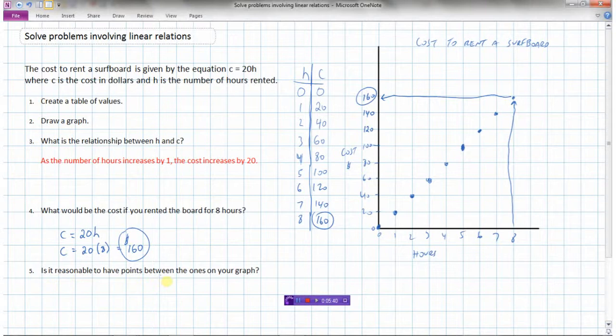Now the last question, is it reasonable to have points between the ones on the graph? So here's our points on the graph. Now, if we rented the board for 1 and a half hours, would that mean that we are only charged $30? Because that's where this point would fit in here. And I suppose that would depend on what the rental policy is for the surfboard company. However, usually, if you rent the board for 1 and a half hours, you're still going to be charged the 2-hour rate. So I would say it's not likely that you're going to be able to have a point between 1 and 2 hours. If you rent for more than an hour, you'll probably be charged for renting the board for the full 2 hours. But again, that would depend on the policy of the surfboard company.